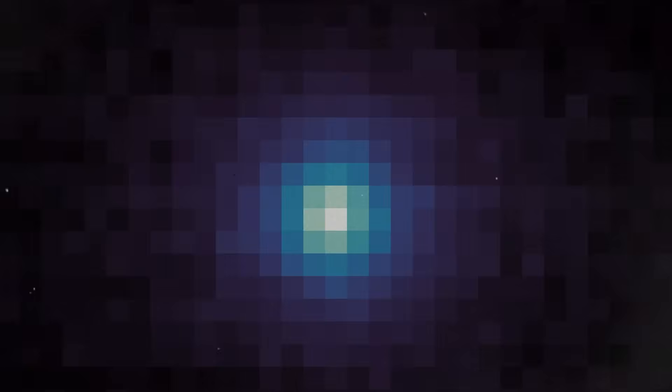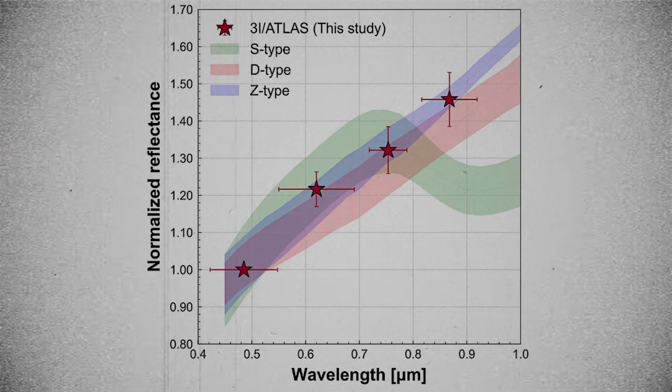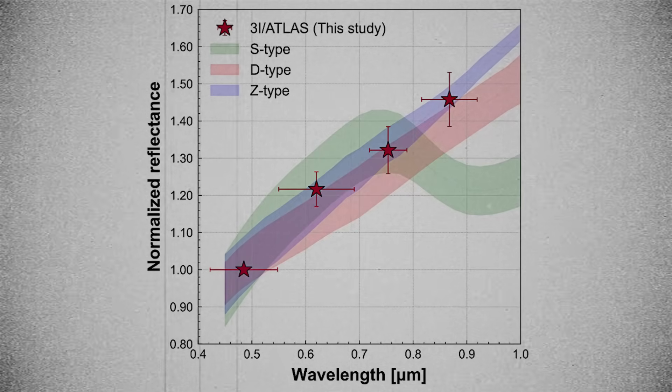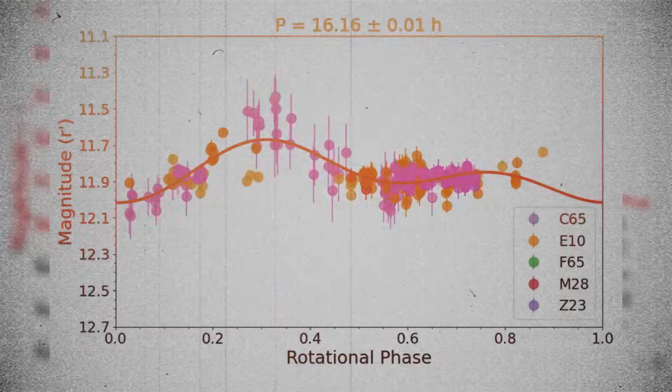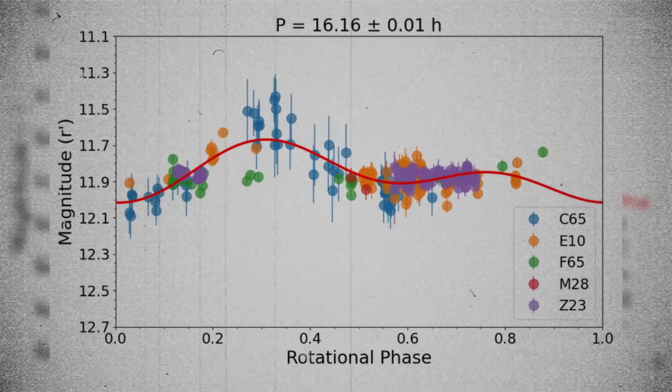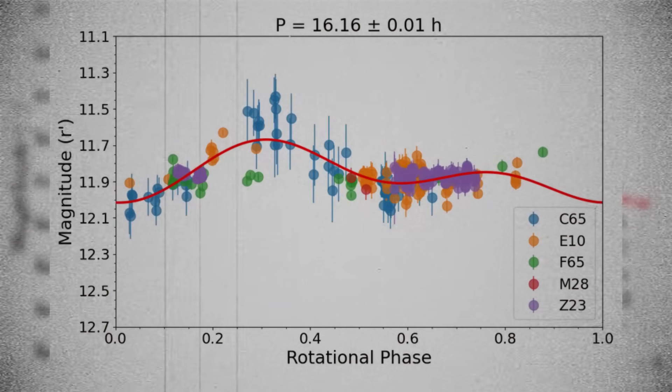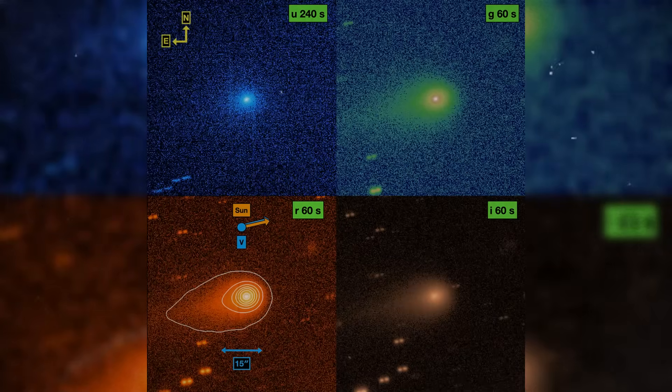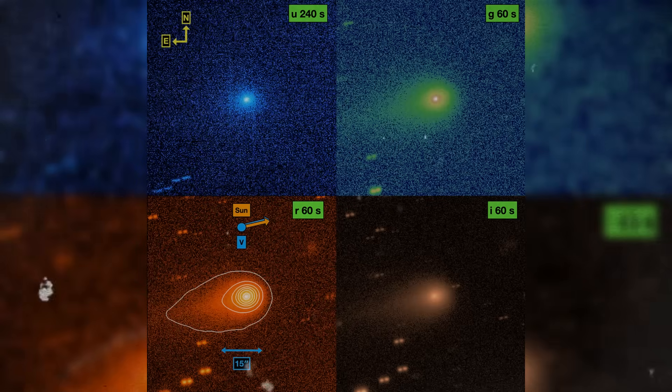The new images show that this blue profile is no longer drifting. It is stabilized. That stability is unusual because even small changes in temperature or outgassing should disrupt the light-scattering particles around the nucleus. Instead, Atlas maintains the signature as if a regulating mechanism is controlling the reflected wavelengths. This is why the color changes matter. They imply Atlas is not simply shedding material randomly. Something about its internal structure or composition is guiding the emission of light in a highly specific way, and no current natural model fully accounts for that behavior.